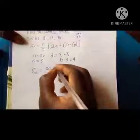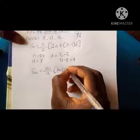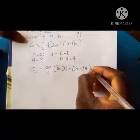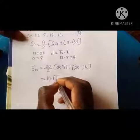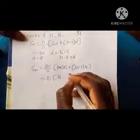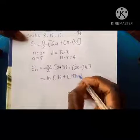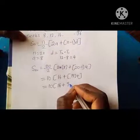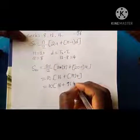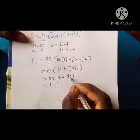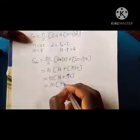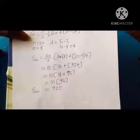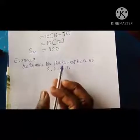Now substituting into the formula: S(20) = 20/2 × (2×8 + (20−1)×4). This gives 10 × (16 + 19×4), which is 10 × (16 + 76), which is 10 × 92. So the sum of the first 20 terms is 920. It's very simple.